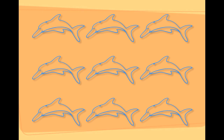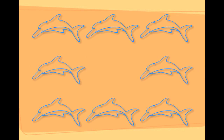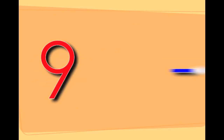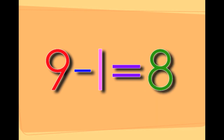There are nine dolphins. Taking one dolphin away from the nine dolphins leaves you with eight dolphins. That's nine minus one equals eight.